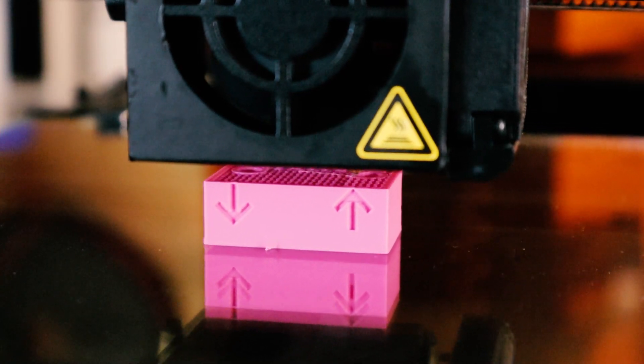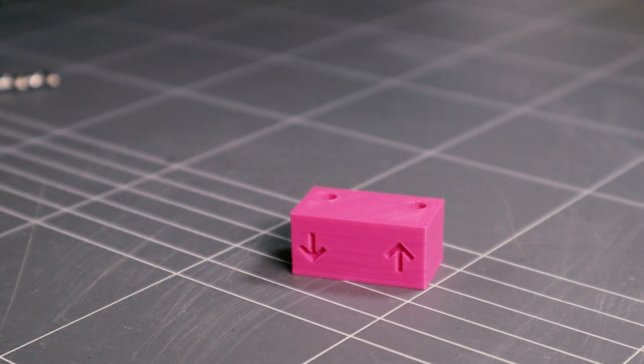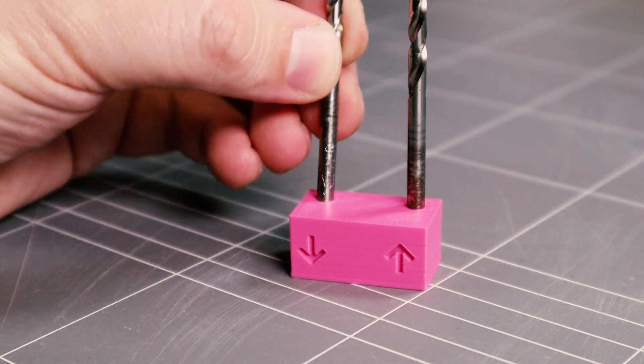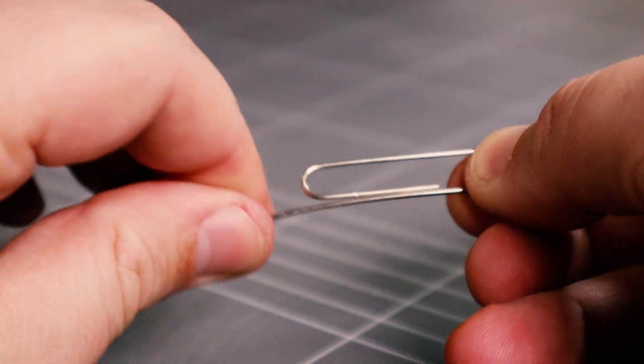This is a jig tool that will help make the spring. It accepts two 4mm drill bits, but you could use anything that's about 4mm in diameter. We'll need a 50mm paperclip. Roughly straighten that out and we're ready to start our spring.